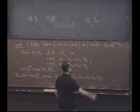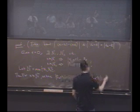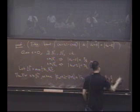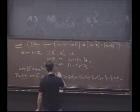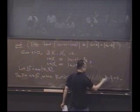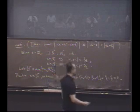which is strictly less than epsilon over 2 plus epsilon over 2, which is epsilon. And the important part here is you've shown this is strictly less than epsilon as desired.